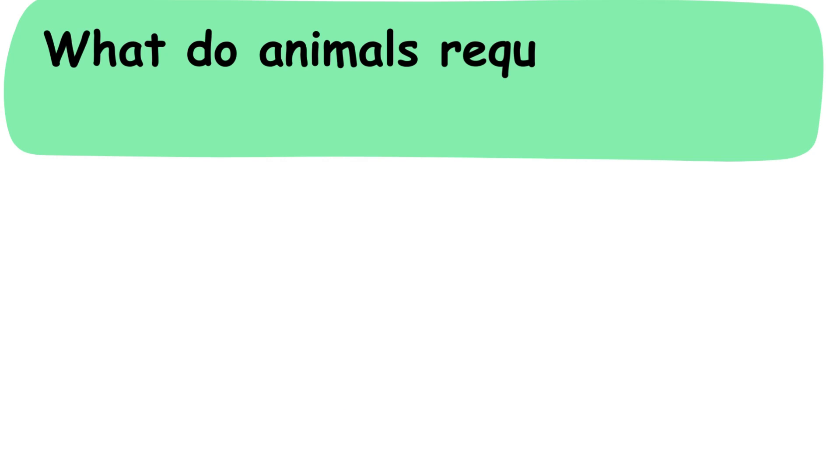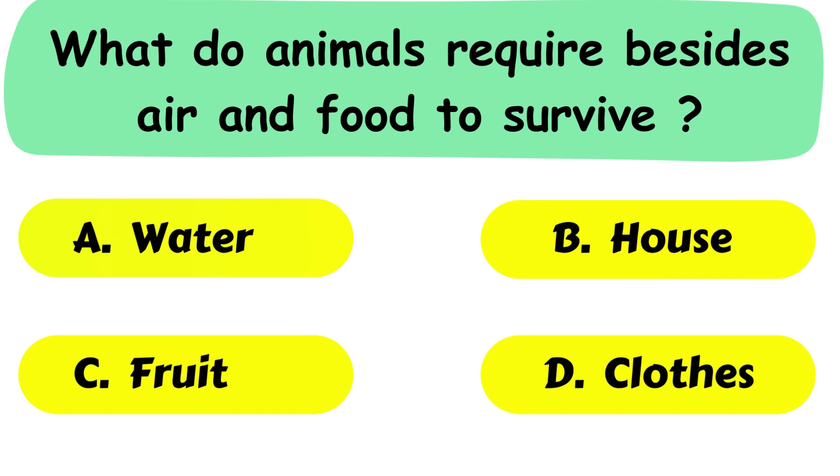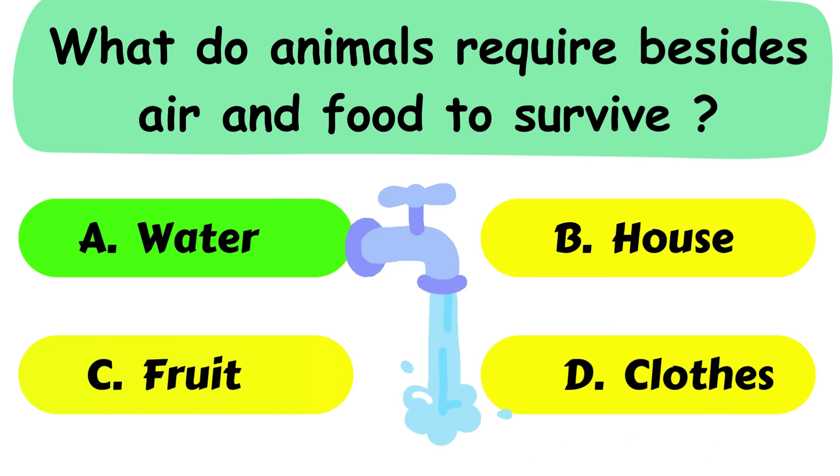Question No. 9. What do animals require besides air and water to survive? A. Water. B. House. C. Fruit or D. Cloths. The correct answer is option A. Water.